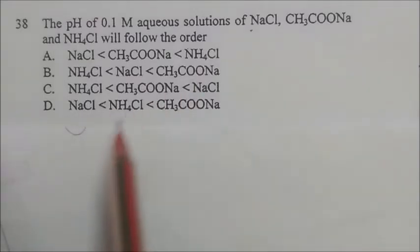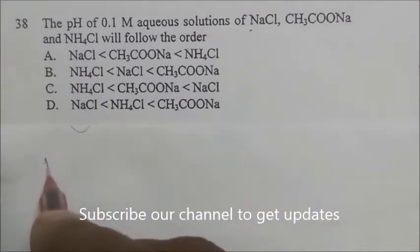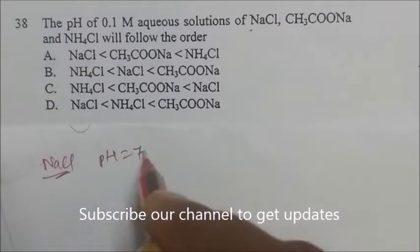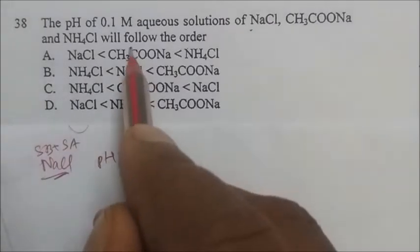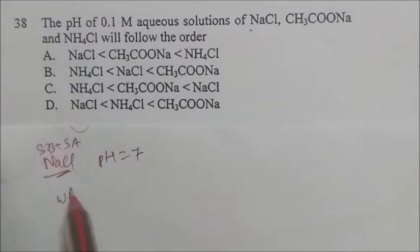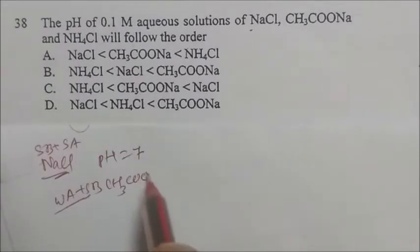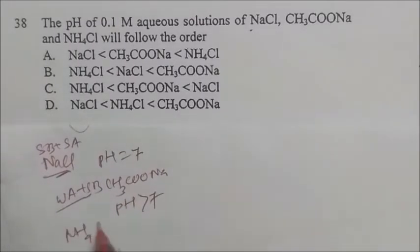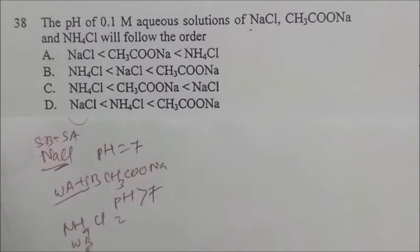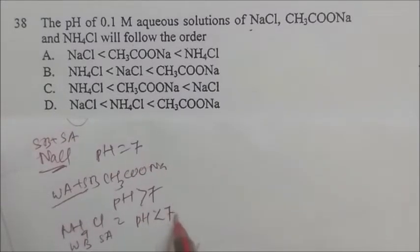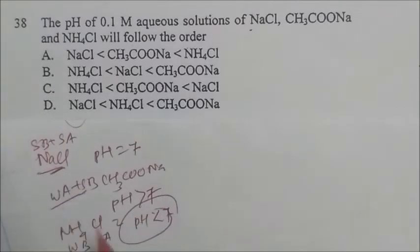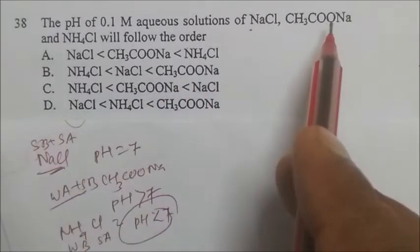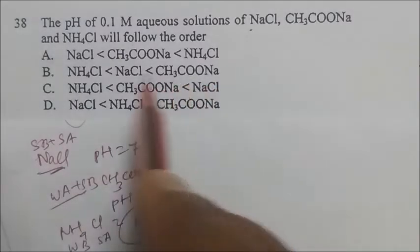We have to find the pH order of given solutions. For sodium chloride (NaCl), strong acid + strong base, pH = 7. For sodium acetate, weak acid + strong base, pH > 7. For ammonium chloride, weak base + strong acid, pH < 7. So the order from highest to lowest pH is: sodium acetate > NaCl > ammonium chloride. The answer is B.